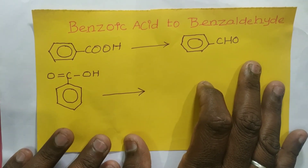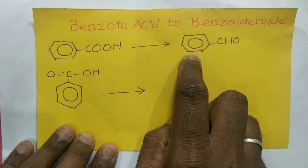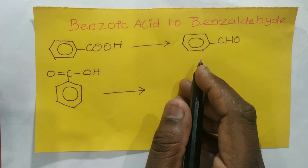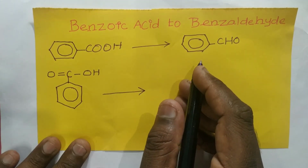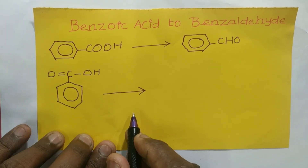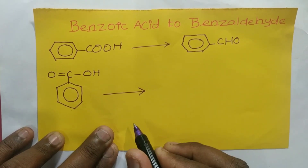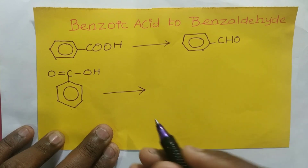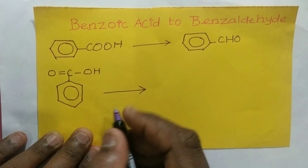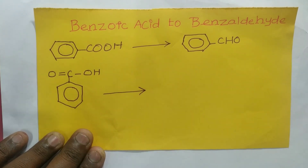You have to write both the reactant and the product to get a clear idea. Here benzoic acid is there, and if I want to convert this into acyl chloride, I'll be doing some reactions to get the desired product.